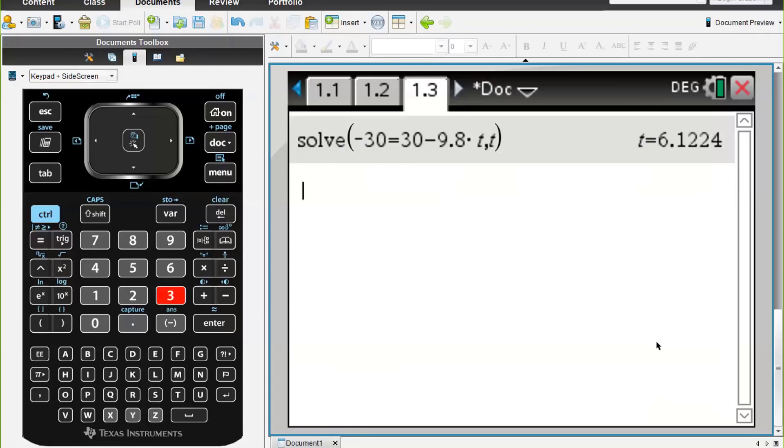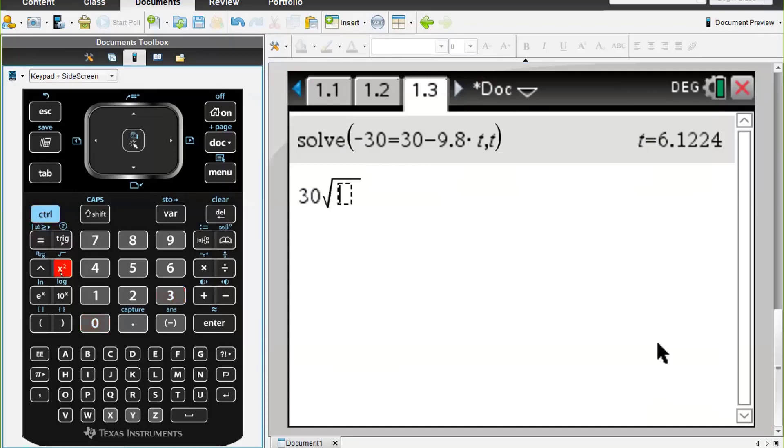So we're going to put in 30√3 times—and if we go up arrow and press enter—and then what we can do is move along back to here and get rid of the t and put in a times, and press enter.